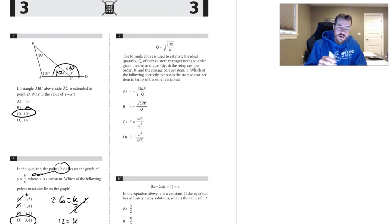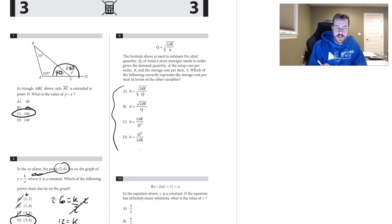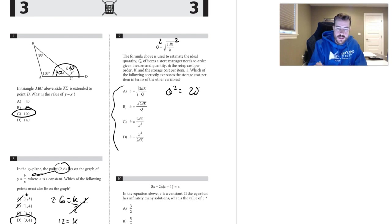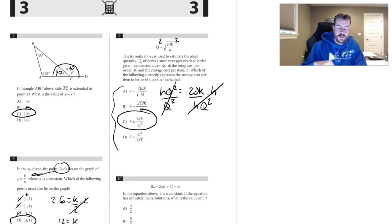Question nine: all answer choices solve for h, so square both sides to get q squared equals 2dk over h. Multiply h to the other side, then divide by q squared to isolate h. The result is h equals 2dk over q squared.